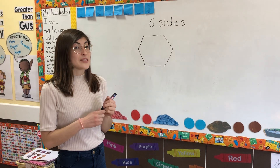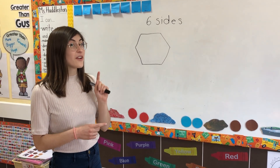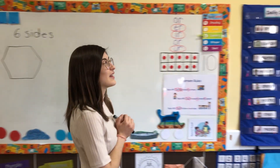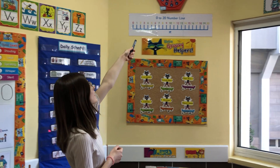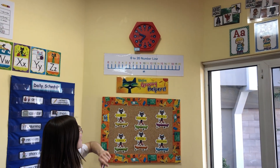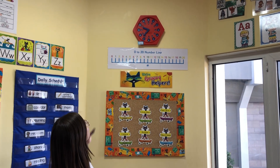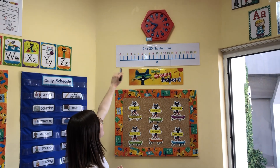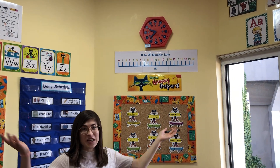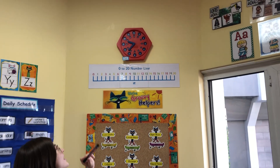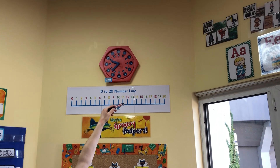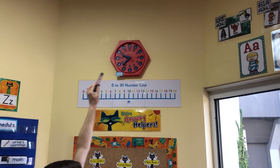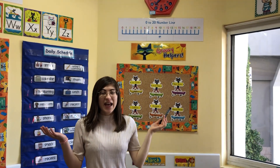Now in Miss Huddleston's classroom there is a very important object that is a hexagon. Let's take a look over here. Up here there is a clock, and our clock in the middle — you might see that there is a circle, and we've learned that shape. But on the outside of the clock it's not a circle. What shape is it? Let's see how many sides. It has one at the top, two, three, four, five, six. Six sides. So that makes it a hexagon.